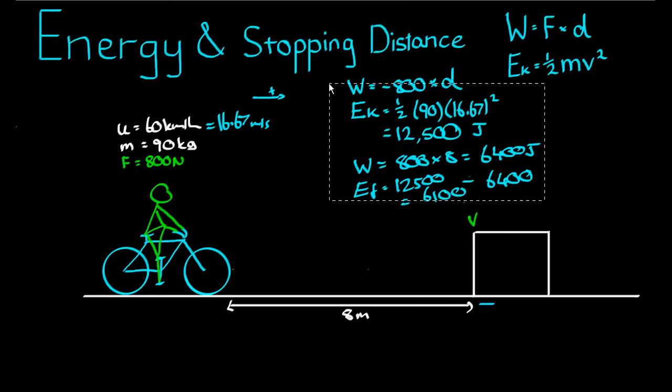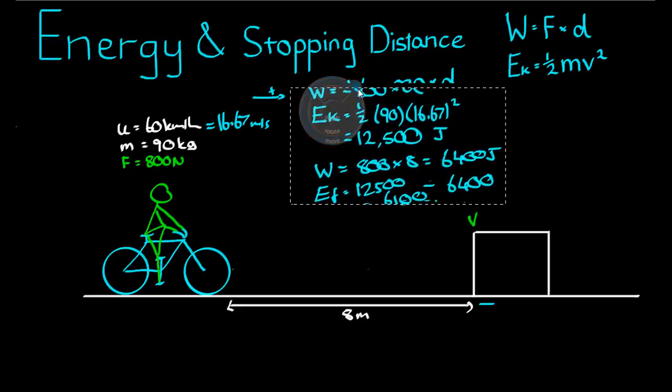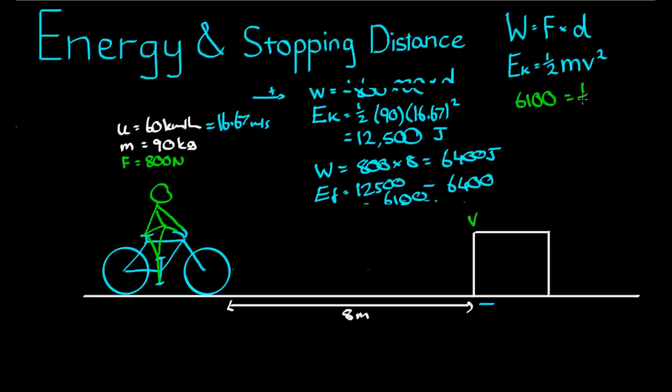And now we can solve the final part of the question. That 6,100 joules worth of kinetic energy must have been equal to a half, the mass of the bike and the person, times the velocity upon impact squared. So 2 times 6,100 divided by 90 is equal to v squared. Taking the square root of both sides gives us v equals the square root of 2 times 6,100 divided by 90.